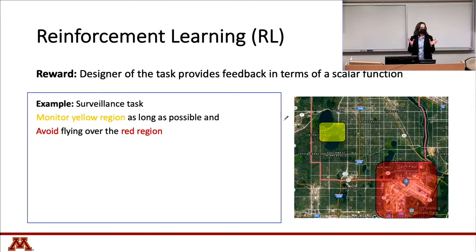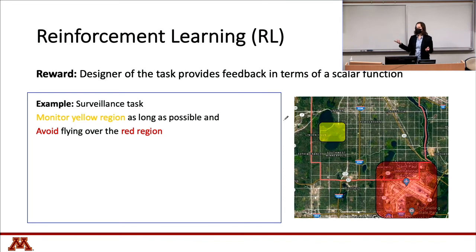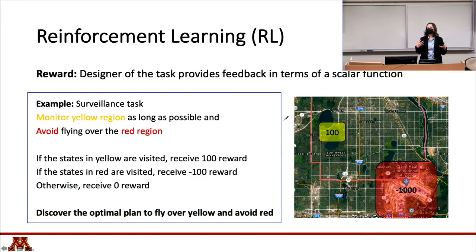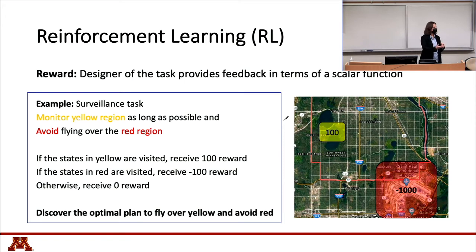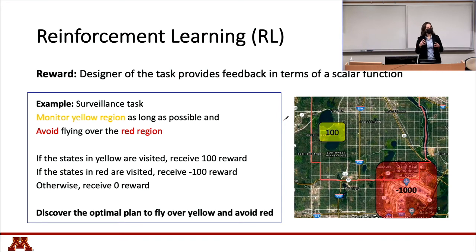The main idea behind reinforcement learning is that the task designer provides the agent with a scalar reward function. For example, in a surveillance task, a drone monitors a region. We want the drone to visit the yellow region as long as possible and avoid the red region. We give a positive reward to the yellow region and a negative reward to the red region, so the drone learns to take actions leading to the yellow region and avoid the red one.